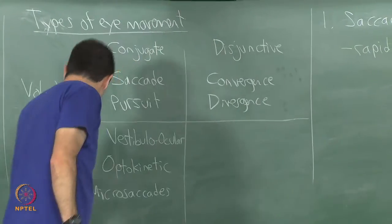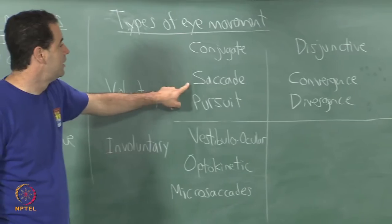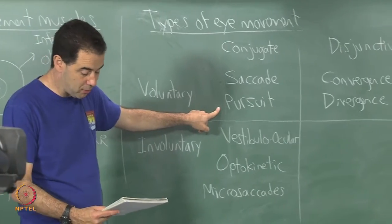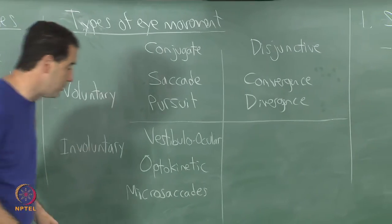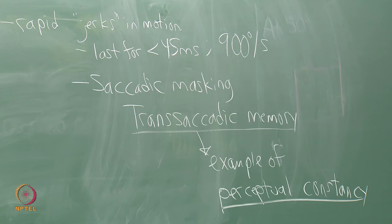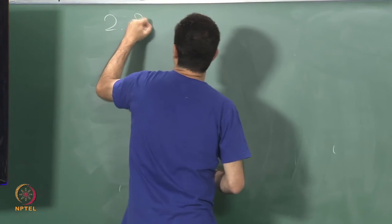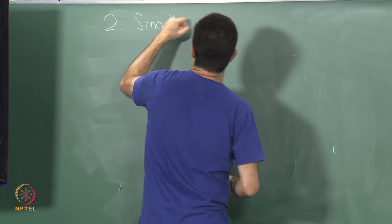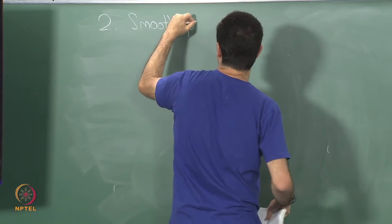So that is one of the motions is saccade. I am going to talk about pursuit next and then we will take a break in a bit and then I will talk about the remainders after that. So two, smooth pursuit.